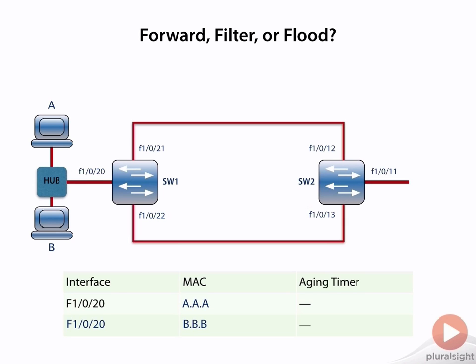That hub, which is not a smart machine, simply copies the frame out of every interface. It's like having a physical connection. It sends it towards the switch and towards B at the same time.